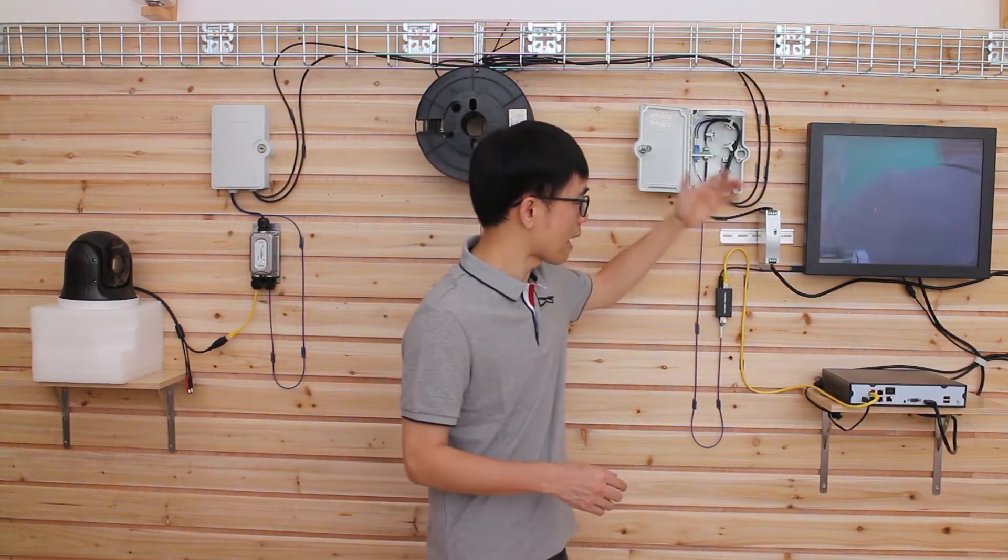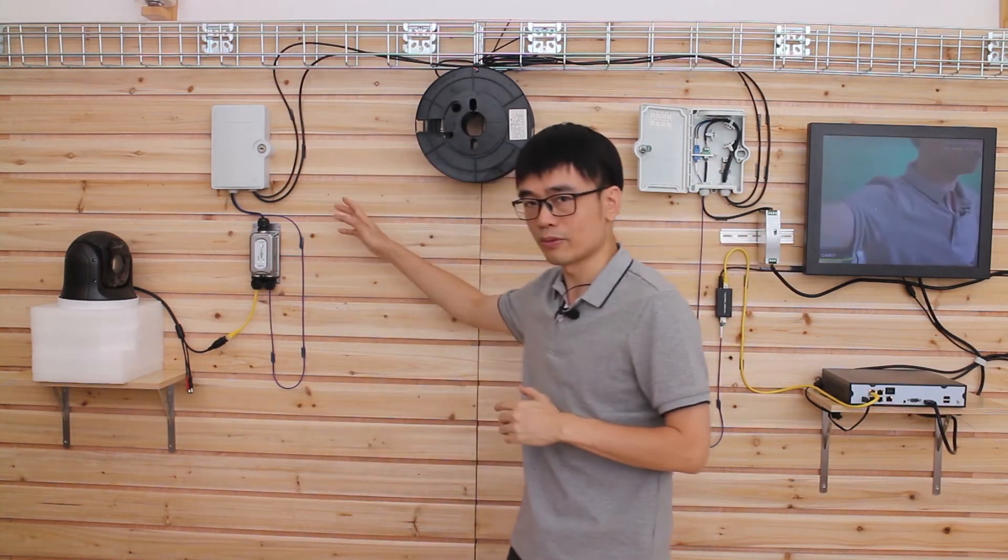we're using two cables—one is the fiber optic cable, another is the power cord. We send power from this power source and it reaches the edge. Now let's move to the edge.